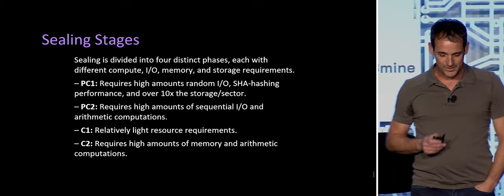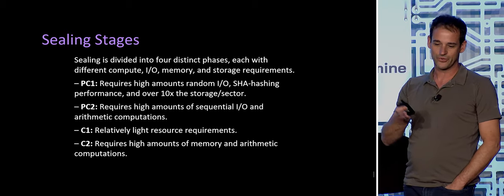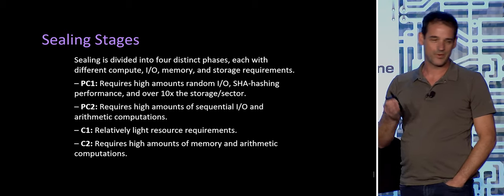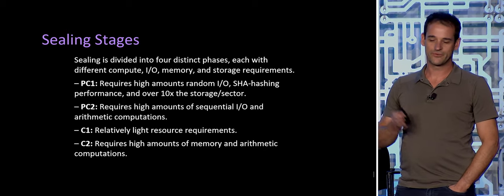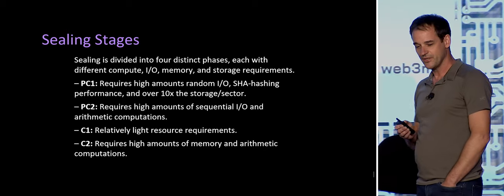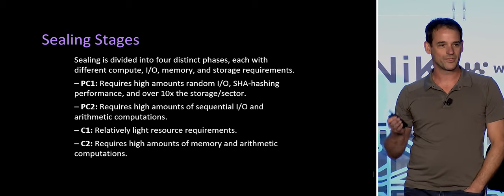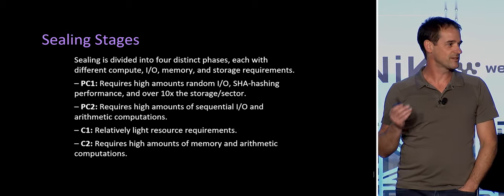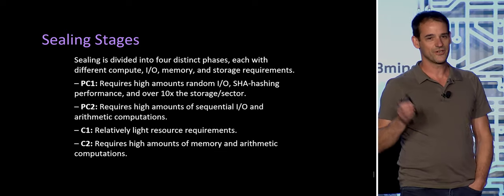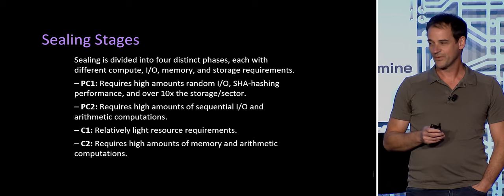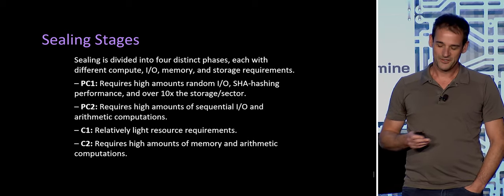Sealing is comprised of four stages. Over the past year, we looked at all of these in excruciating detail and kind of redesigned them all from the ground up. Each of these stages has different needs in terms of compute, I/O, memory, and disk. Designing a system that satisfies all of these at the same time while optimizing it on the fly was pretty tricky.